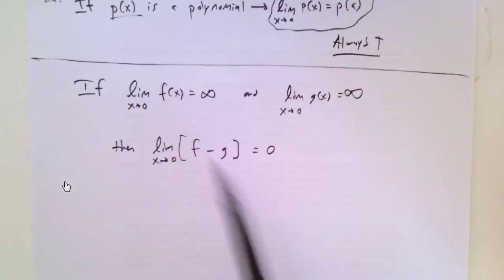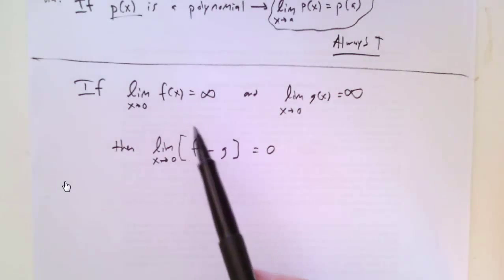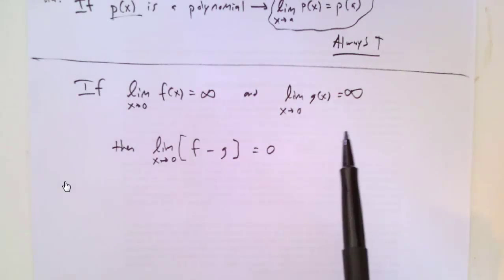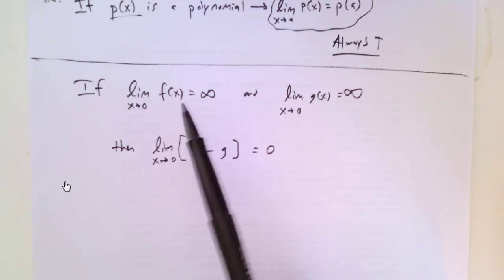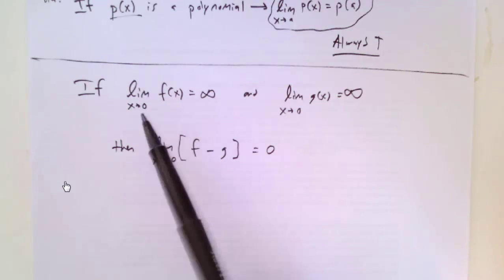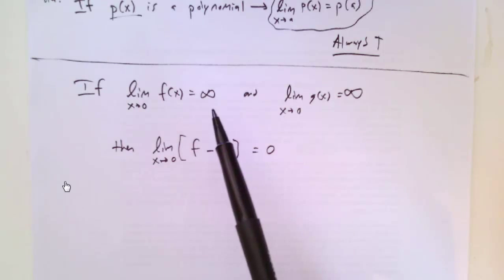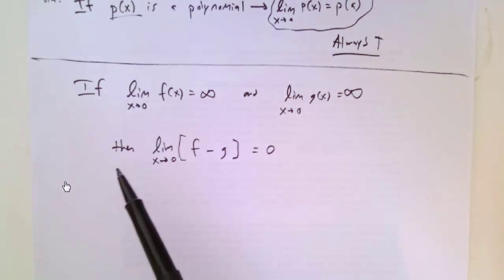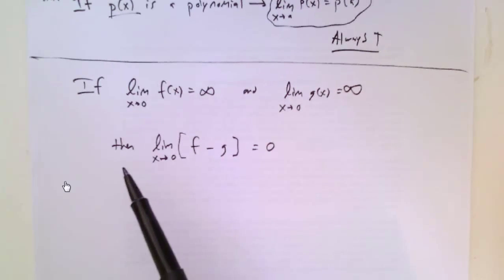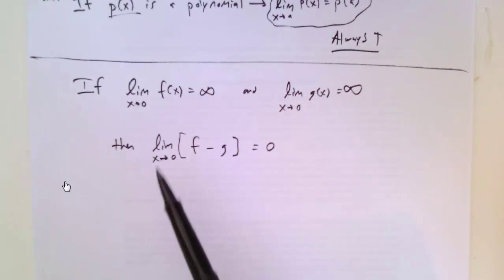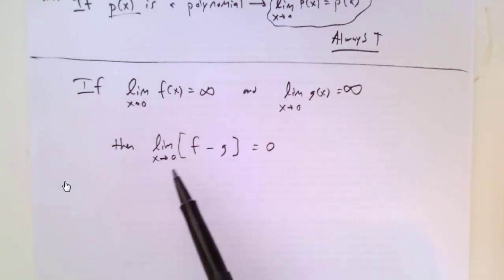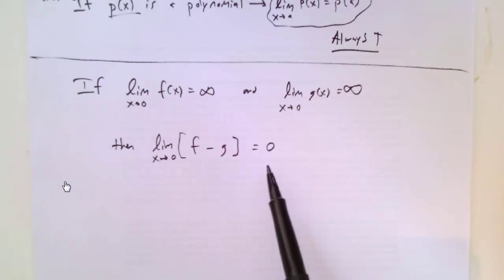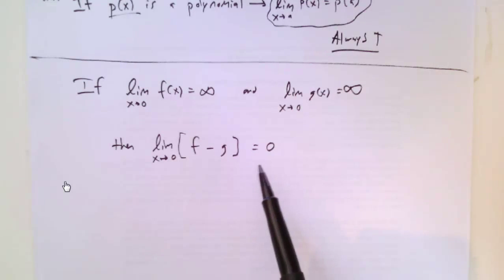Next one: if we have two functions F and G, and each of their limits as X approaches 0 go to infinity, then it must be true that the limit of F minus G as X goes to 0 equals 0.